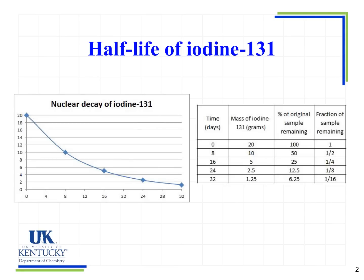Now we look at a second half-life — so from 0 to 8 days, and then to 16 days. From day 8 to day 16 we have another half-life, and what we see happening is the amount is cut in half again. We go from 10 grams to 5 grams. Likewise, we go from 50% of the original sample to 25%, and from one half of the original sample to one fourth of the original sample.